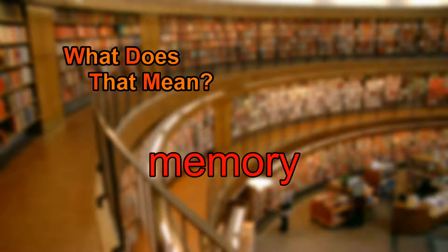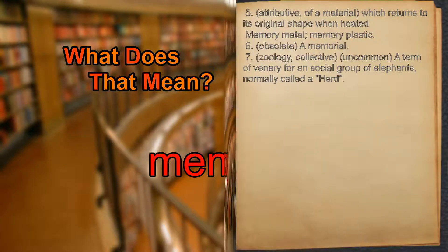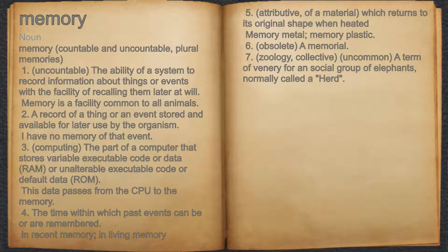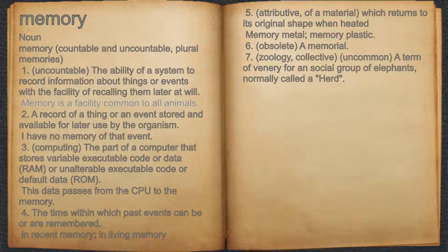What does memory mean? Memory. Noun. 1. Uncountable, the ability of a system to record information about things or events with the facility of recalling them later at will. For example, memory is a facility common to all animals.